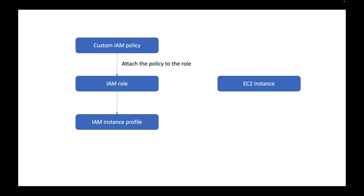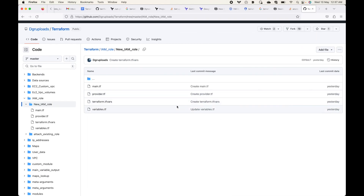We will be launching one EC2 instance and then we will attach the instance profile that we have created to the new EC2 instance. In the last session we looked at how we can attach an existing IAM role by making use of the data source, and here we are going to create a new IAM role and attach that to the EC2 instance.